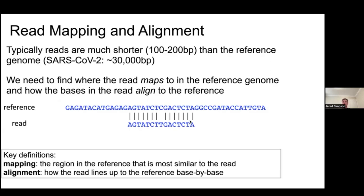Read mappers need to be incredibly fast because they process millions or even billions of reads, so they are highly optimized software capable of matching reads against very long reference genomes — even up to the 3-billion-base human reference genome. At the end of this process, we get a SAM or BAM file describing how the reads align to the reference genome.